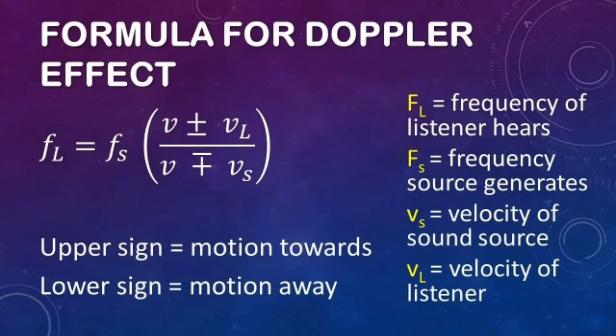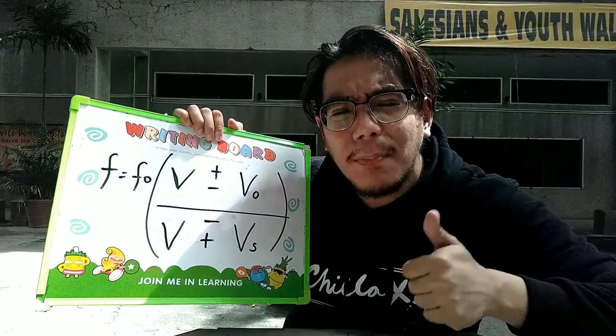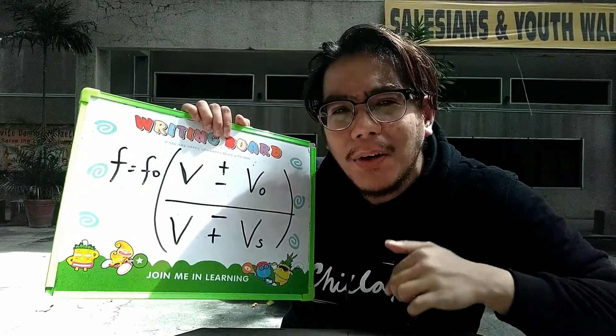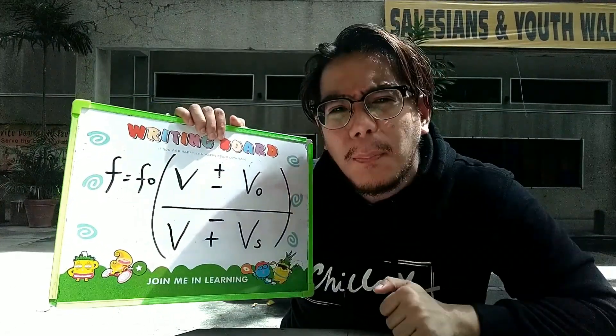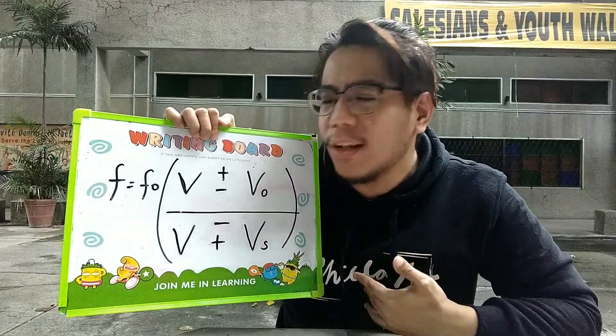Alam na natin kung anong ibig sabihin ng Doppler Effect. Ano nga ba ang formula neto? Ito nga pala yung formula ng Doppler Effect. Mukha siyang mahirap pero madali lang talaga siya. Itong formula na ito is the general formula for Doppler Effect. At alam ninyo ba na pwede pa tayo makagawa ng marami pang formulas coming from this formula?